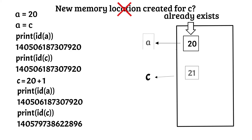Now if we create another variable D and assign the value 20, do you think a new memory location will be allocated to this variable? Again the answer is no. As the integer object 20 already exists in the memory, Python will simply create a new reference to this variable name, which is D. This is extremely memory efficient. So whenever you create any new variable and assign it with a value, Python will always check if the memory already has the value — if yes, then it will simply create a reference to the variable name. If not, then it will create the value object in memory and then create a reference.